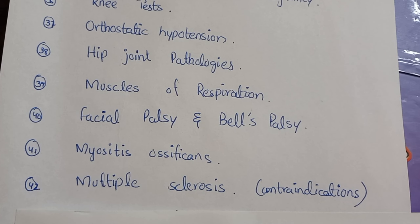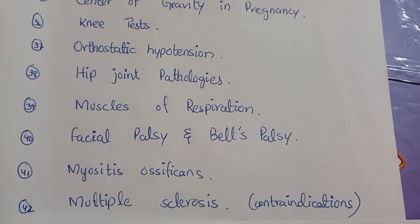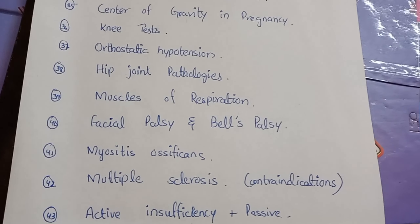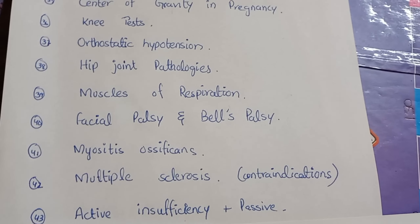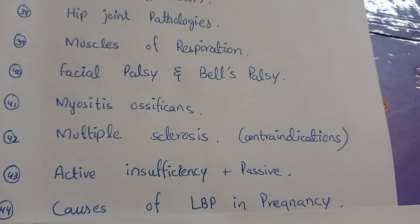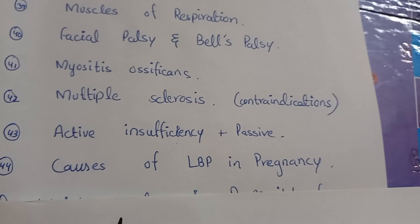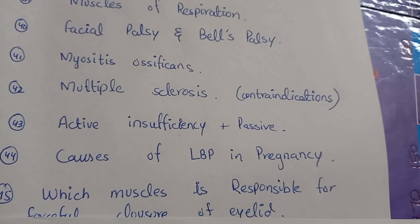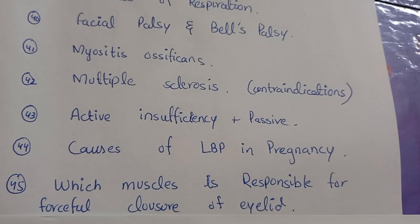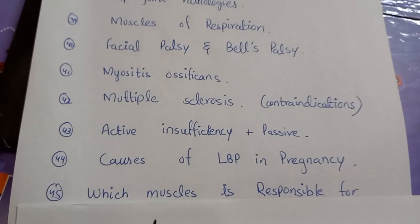Number forty-two is about multiple sclerosis, and the contraindications of multiple sclerosis are very important. Number forty-three is about active and passive insufficiency. Number forty-four is about causes of low back pain in pregnancy. Number forty-five is about which muscle is responsible for forceful closure of the eyelid.